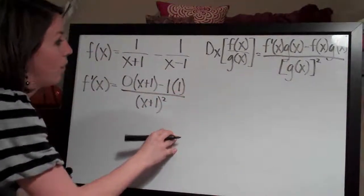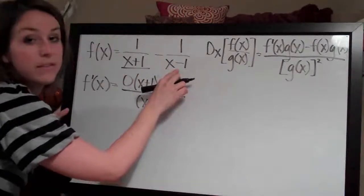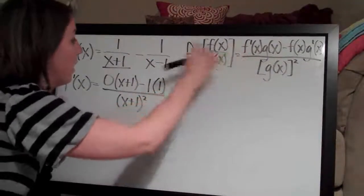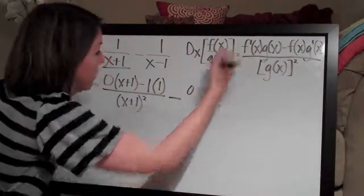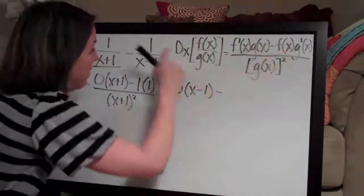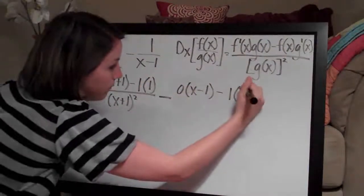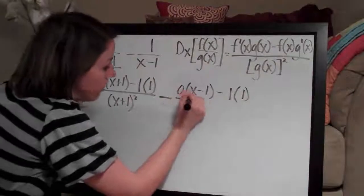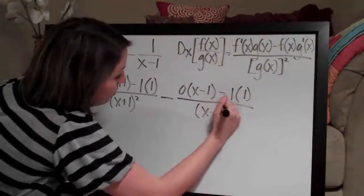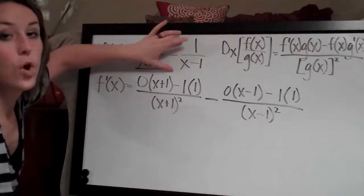We've applied the quotient rule to the first fraction, 1 over x plus 1. Now we need to apply it to 1 over x minus 1. So we say minus, and go through it again. The derivative of the top, 1, is 0 times — we leave the bottom intact — x minus 1, minus the top f of x, which is 1, times the derivative of the bottom. The derivative of x minus 1 is 1. Then we divide by the bottom squared, x minus 1 squared.